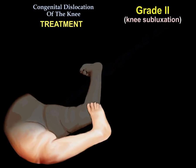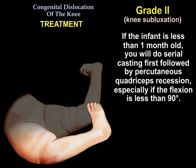In grade two, if the infant is less than one month old, serial casting is done first, followed by percutaneous quadriceps recession, especially if flexion remains less than 90 degrees.